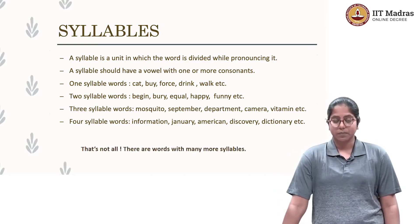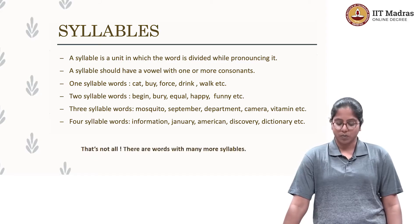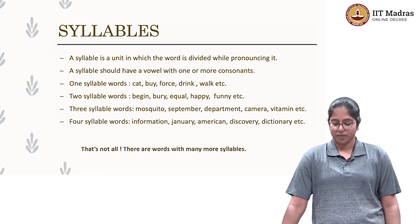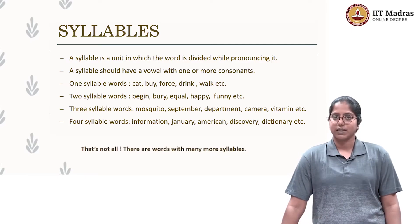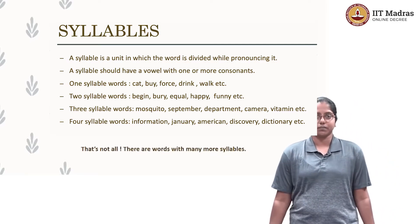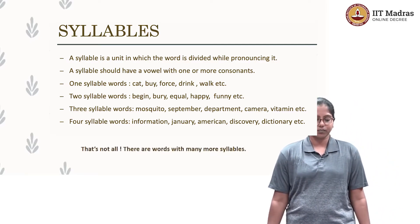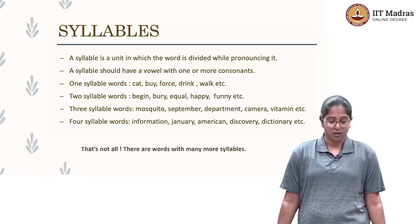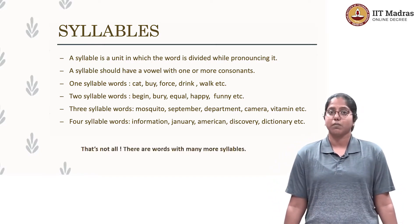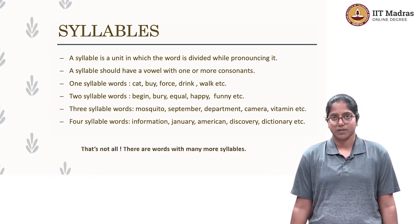Examples of four-syllabled words are: information, January, American, discovery, and dictionary. But that's not all — there are words with many more syllables.